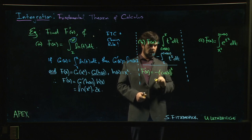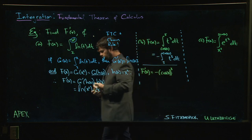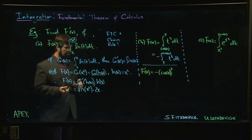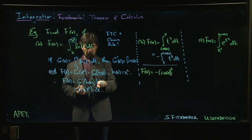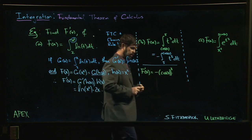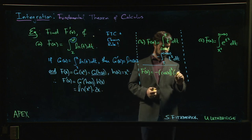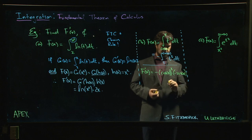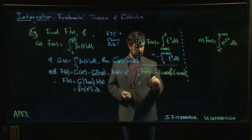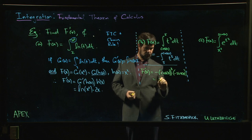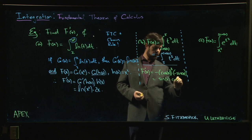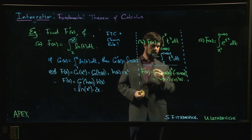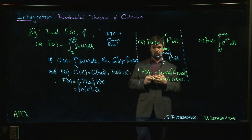But you're not done, because the chain rule says if you've got a composition, you don't just take the derivative of the outside; you have to also multiply by the derivative of the inside. So the derivative of cosine is negative sine. The minus signs cancel out, and you've got sin x times cos cubed x. And you're done. Not so bad.